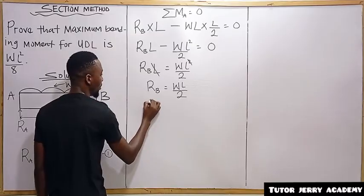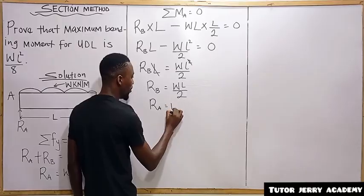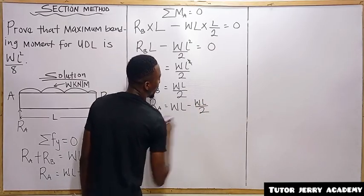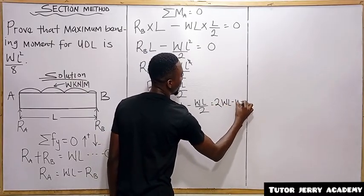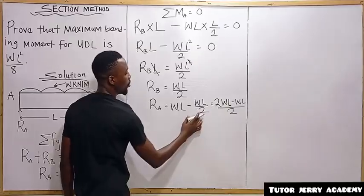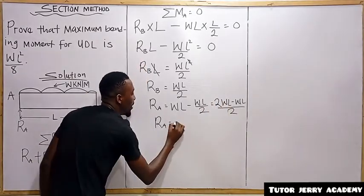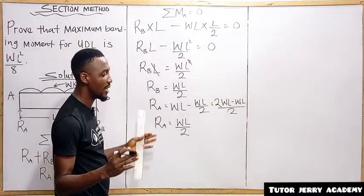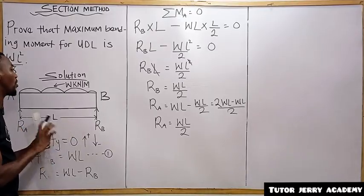Now let's find reaction at A. From equation 1, RA = WL minus RB = WL minus WL/2 = (2WL minus WL)/2 = WL/2. So RA also equals WL/2. This confirms that for a simply supported beam carrying a uniform distributed load, the reactions are equal.